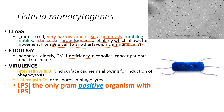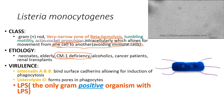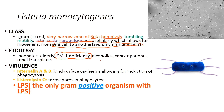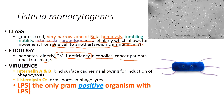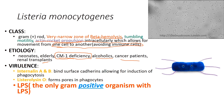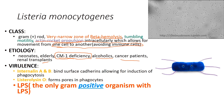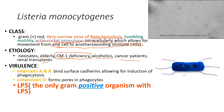Listeria monocytogenes also affects alcoholics, cancer patients, and renal transplant recipients. It is acquired by ingesting contaminated dairy products, spoiled milk, old cheese, or vegetables. A classic stem: someone went on a picnic and now has meningitis with gram-positive rods — think Listeria. Key virulence factors include internalin A and B, which bind cadherins to allow phagocytosis and entry, and listeriolysin O, which forms pores in phagocytes allowing CNS entry.